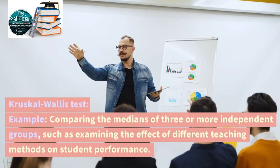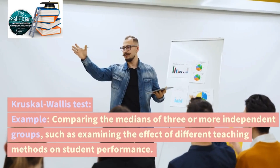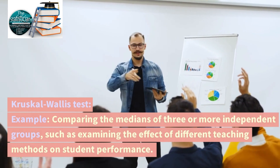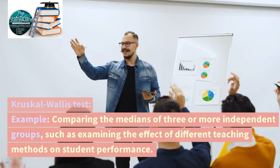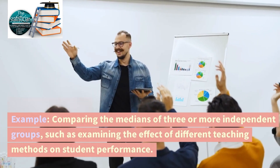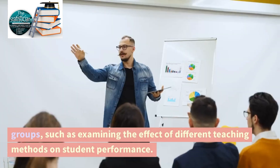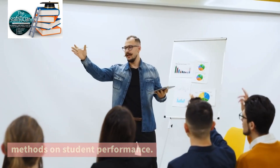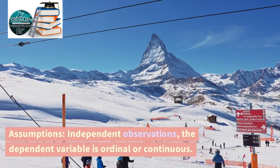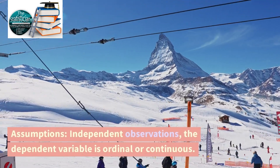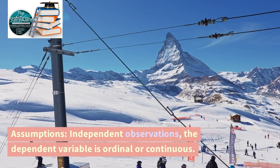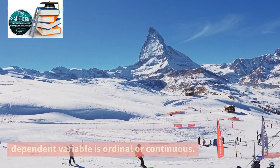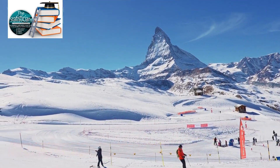Kruskal-Wallis test. Example: Comparing the medians of three or more independent groups, such as examining the effect of different teaching methods on student performance. Assumptions: Independent observations; the dependent variable is ordinal or continuous.